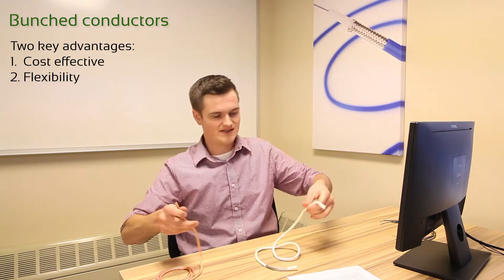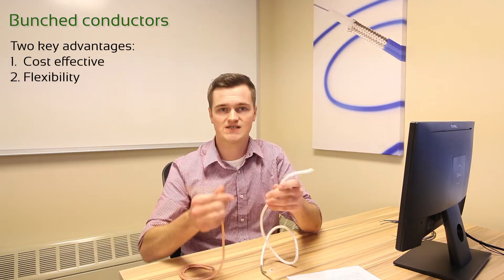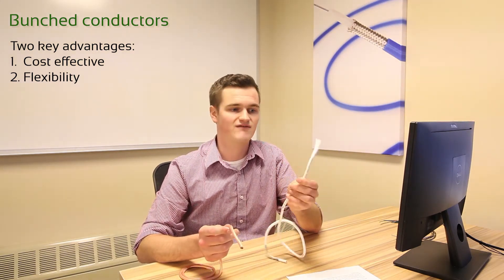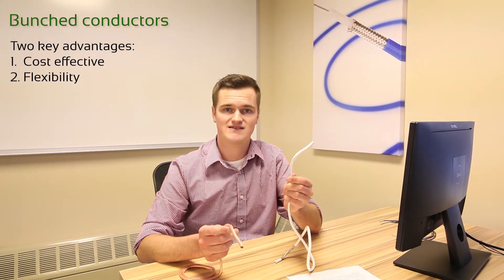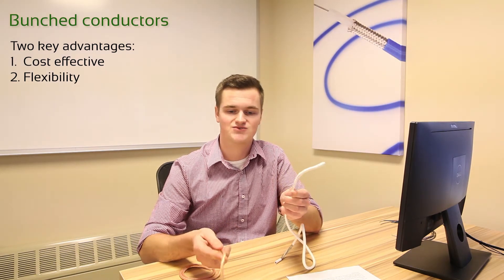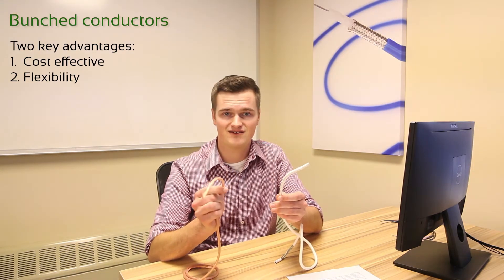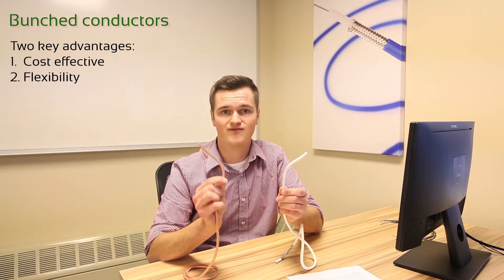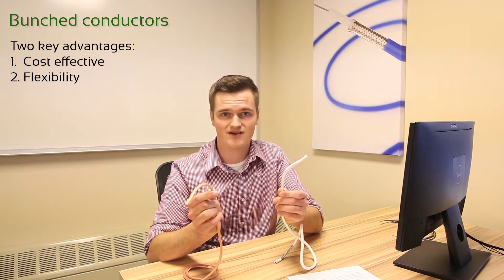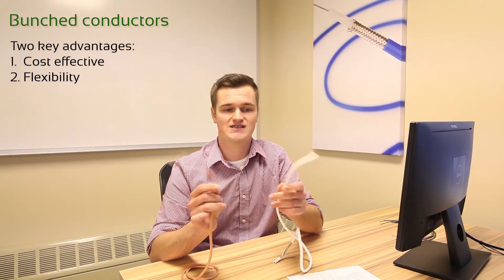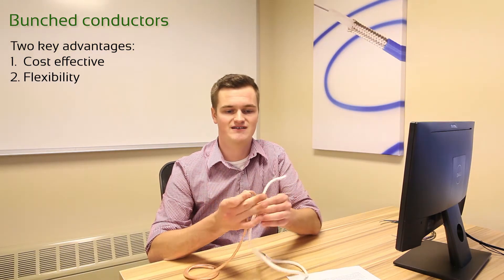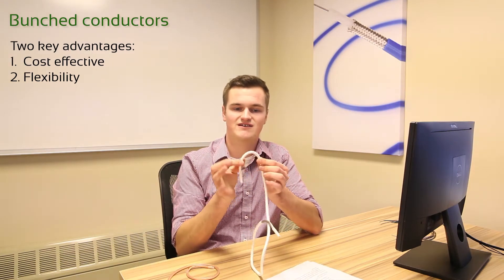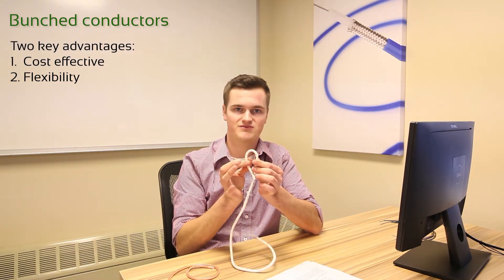Here we have an example of two 6-gauge conductors. The one in my left hand uses about 1,500 ends with 36-gauge wire, whereas the one in my right hand uses about 10,000 ends of 46-gauge wire, which is much finer. As you can see, the finer strand is much more flexible, whereas the coarser strand limits you a little bit.